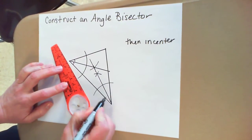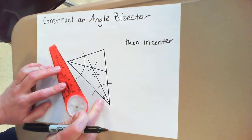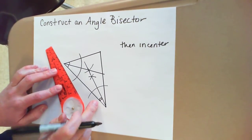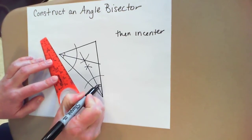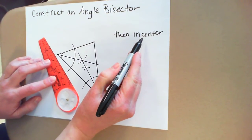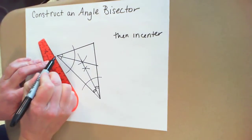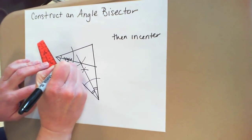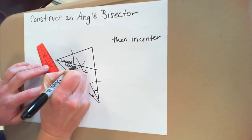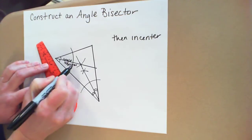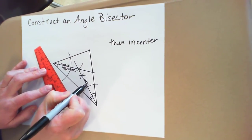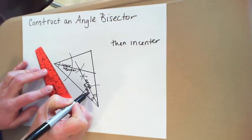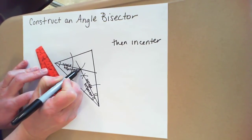Since I bisected the angle, I need congruent markings. This is not necessarily the same size as that one, so I'm using two arches. And the in-center is located where the two angle bisectors meet. So that's one angle bisector, and here's the other angle bisector. Where those two meet, which is right here.